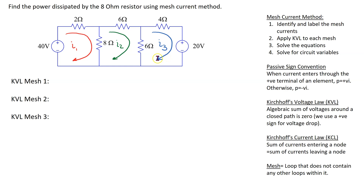Let's get started with step 2, which is applying Kirchhoff's voltage law to each mesh. Recall that Kirchhoff's voltage law states that the algebraic sum of voltages around a closed path is zero. We use a positive sign for voltage drop and a negative sign for voltage rise, in accordance with the passive sign convention.